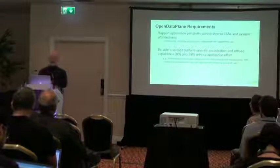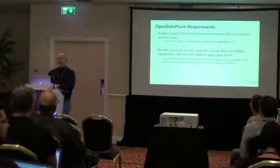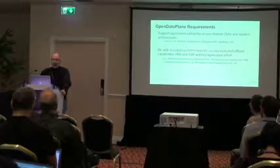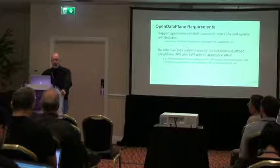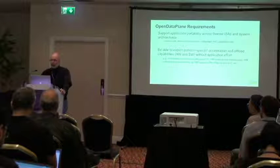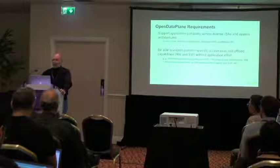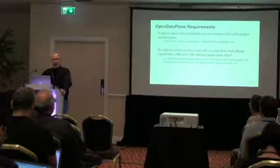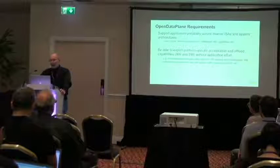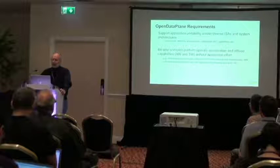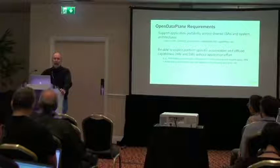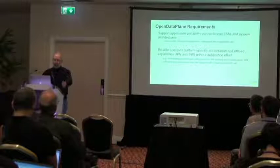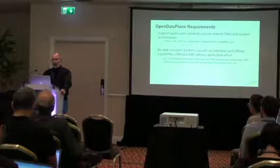The second requirement was to be able to exploit hardware-specific acceleration and offload capabilities without application effort. Looking at capabilities available in SOCs, these include hardware buffer and packet management, integrated IO not using PCIe, hardware parsing and classification of packets, hardware scheduling and flow ordering, hardware egress traffic shaping and QoS. These are things you typically find in network SOCs which are not present on general-purpose processors, although hardware capabilities do evolve over time.